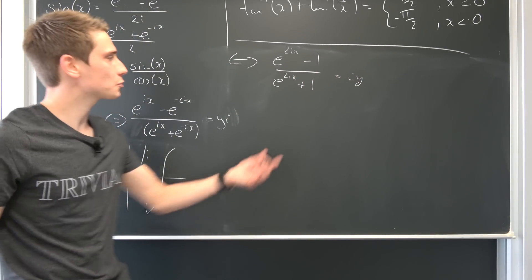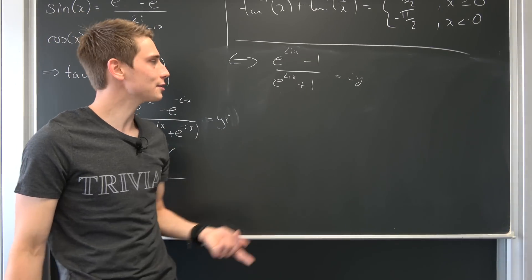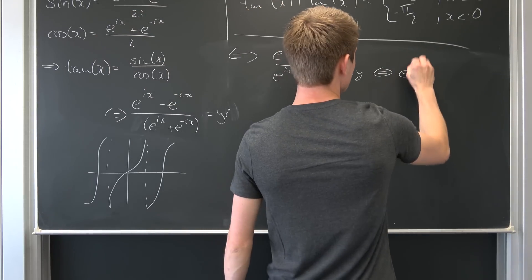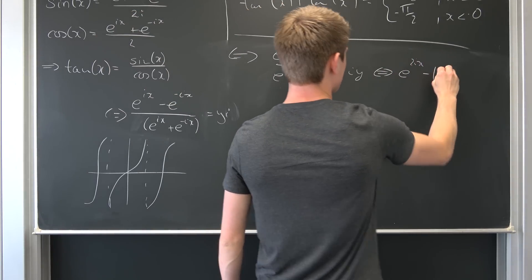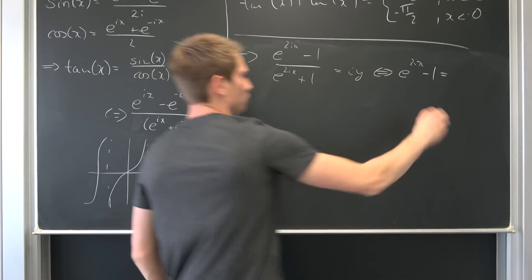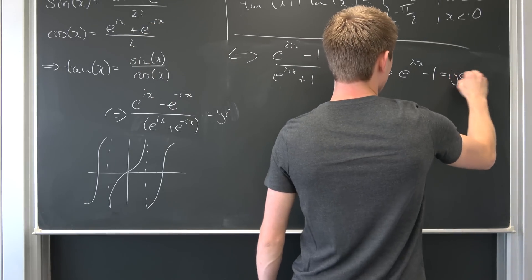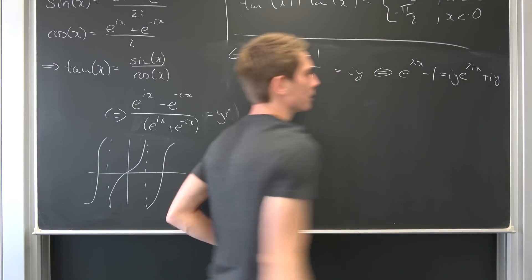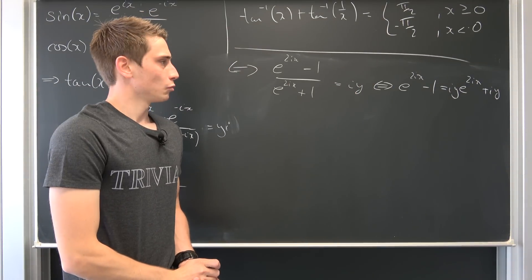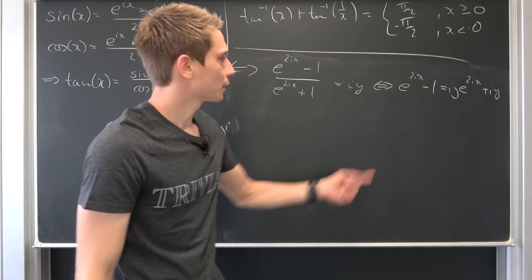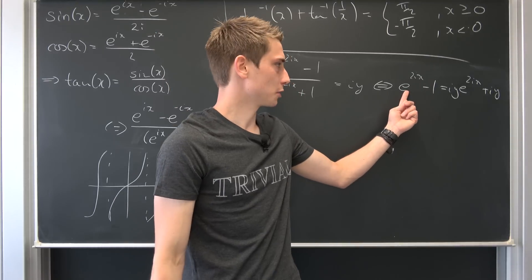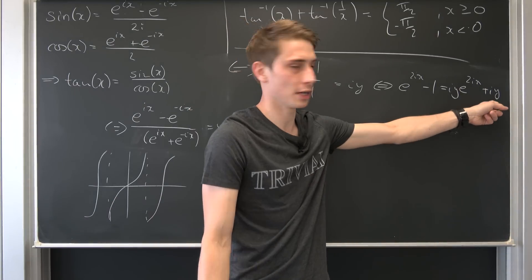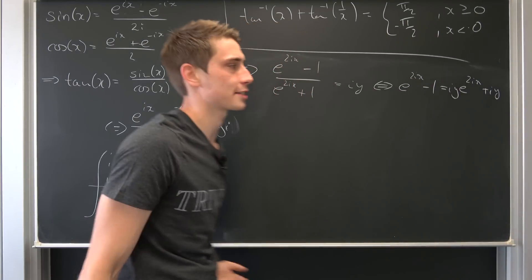Now we can multiply both sides by the denominator — it's not equal to 0 — so we get e^(2ix) − 1 = i·y·e^(2ix) + i·y. We can bring the e^(2ix) term to the other side and factor it out, and bring i·y to the left-hand side.